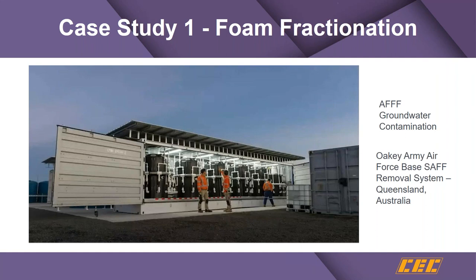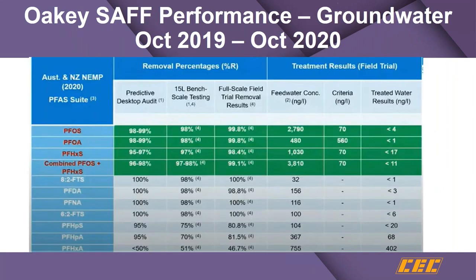Let's look at a couple of case studies. The first is foam fractionation from contaminated groundwater — a containerized system at an Australian Air Force base that has been in operation for over a year. They found significant ability to remove PFAS constituents by foam fractionation for longer chain compounds, while shorter chain compounds and precursors are not nearly as well removed, but the project requirements were met.